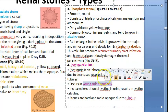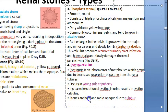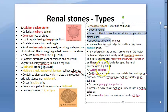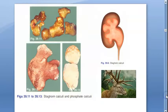Cystine calculi occur usually in young girls at puberty due to an inborn error of metabolism — decreased reabsorption of cystine, causing cystinuria and cystine stones. These stones are hard. So to summarize: calcium oxalate is very common; uric acid stones are soft; phosphate stones are staghorn; and cystine calculi occur in girls and are hard.